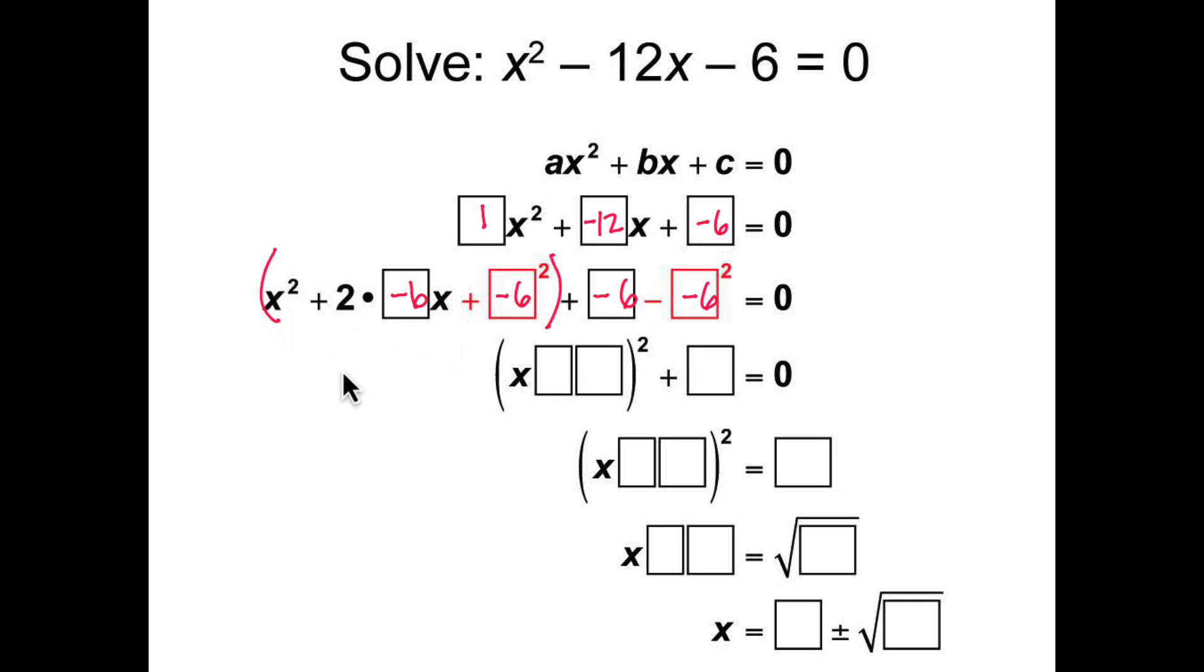This expression can be rewritten as a linear term squared. So this can be rewritten as x plus negative 6, the entire quantity squared, plus negative 6 minus negative 6 squared. So negative 6 squared is 36. So negative 6 minus 36 is minus 42.